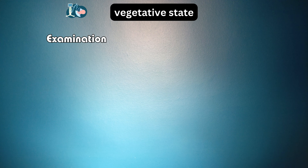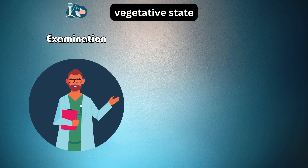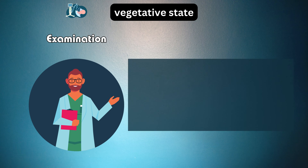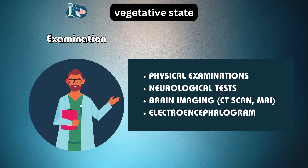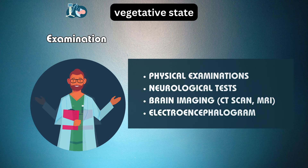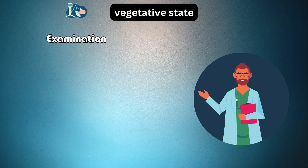Medical professionals utilize a range of assessments to examine patients in a vegetative state. These assessments can involve physical examinations, neurological tests, brain imaging such as CT scans or MRI, and electrophysiological studies like electroencephalograms. Let's break it down into six essential steps.